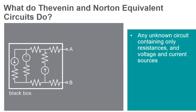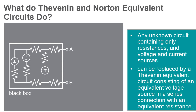Any unknown circuit containing only resistances and voltage and current sources can be replaced by a Thevenin equivalent circuit consisting of an equivalent voltage source in a series connection with an equivalent resistance.